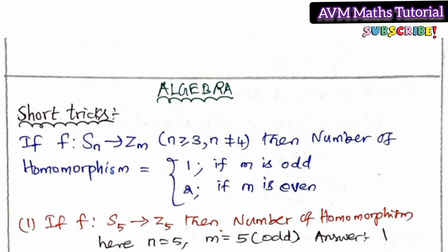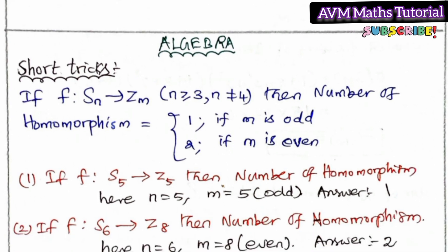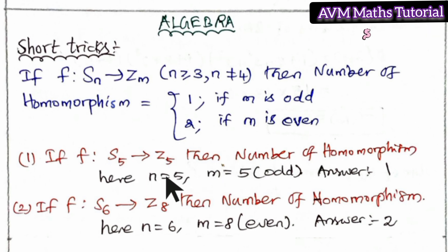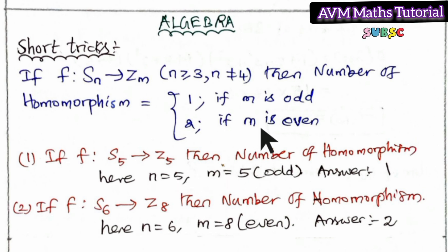Let's look at the example. If F is from Z5 to Z5, then the number of homomorphisms is 5. Here N is 5 and M is 5. If M is 5, which is an odd number, the number of homomorphisms is 1.